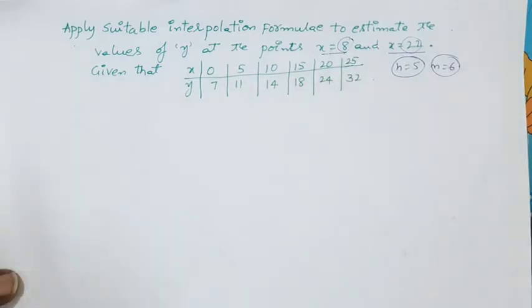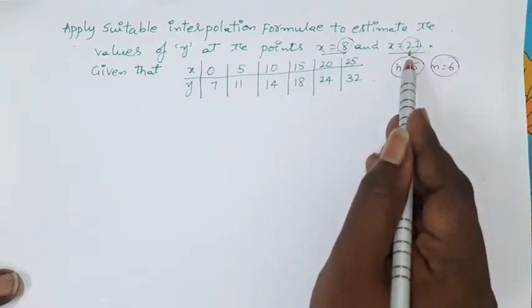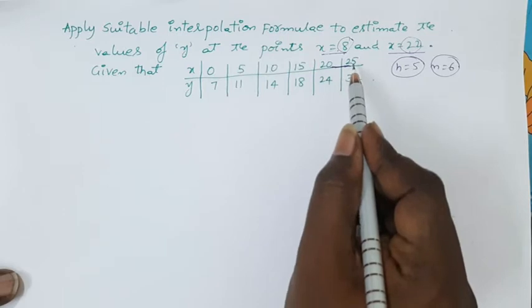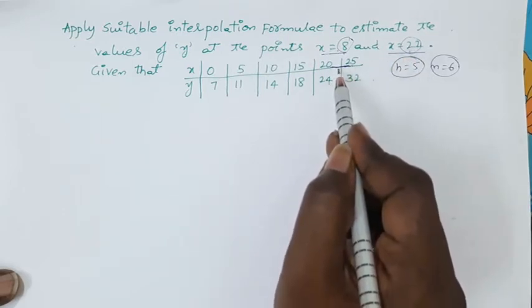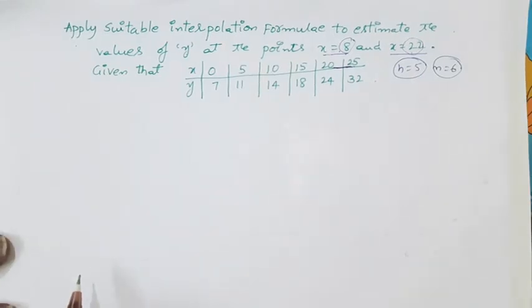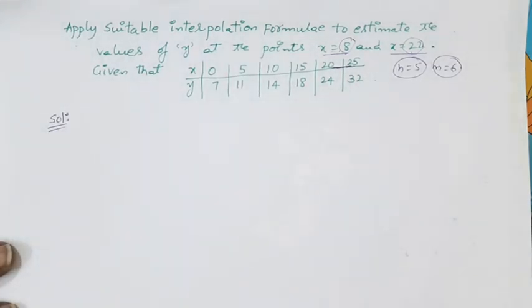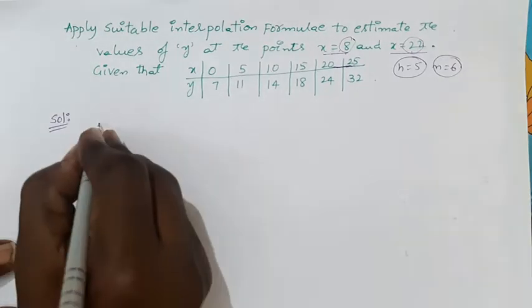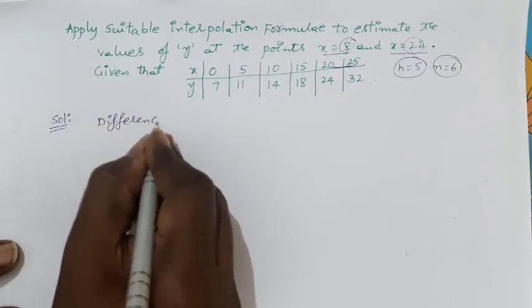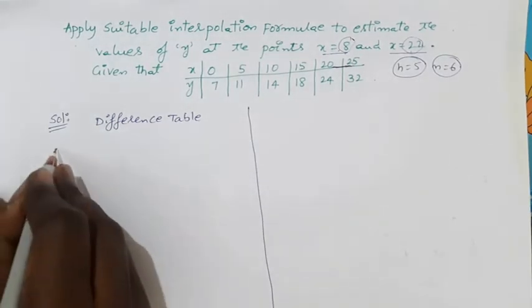Clearly, x equal to 8 lies in the first half of the data, almost at the start, so we apply Newton's forward interpolation formula to estimate y at x equal to 8. But x equal to 22 is at the end of the data, lying between 20 and 25 in the last interval, so we apply Newton's backward interpolation formula to find y at 22. Since we are using both formulas, simply construct a single difference table.